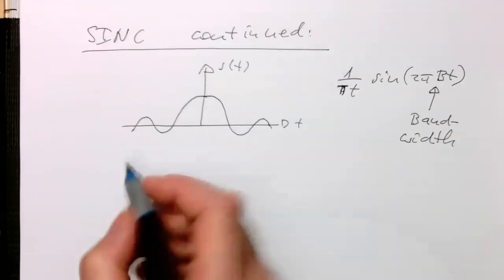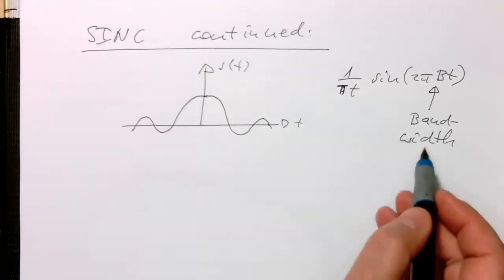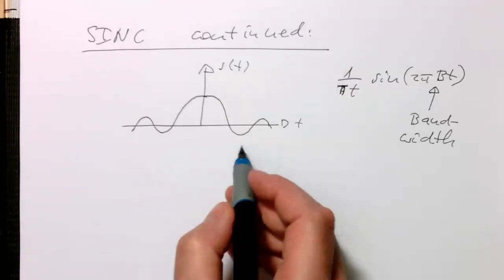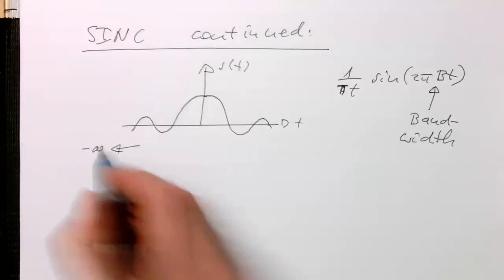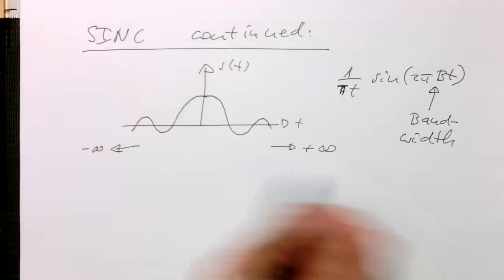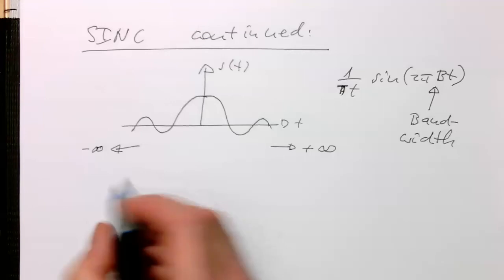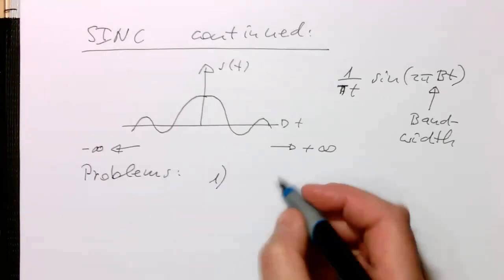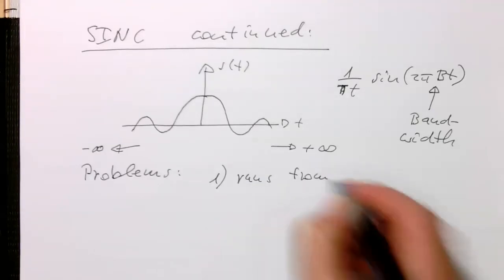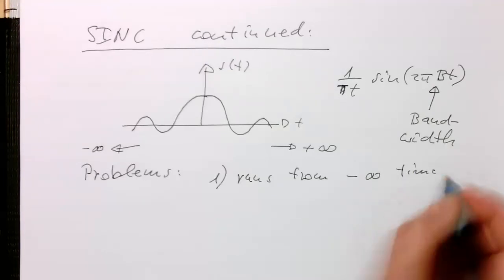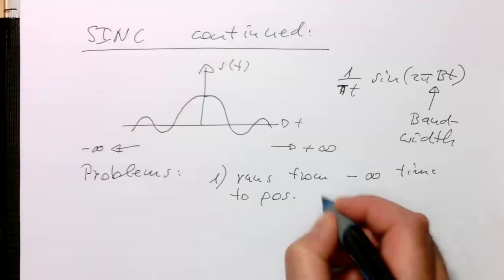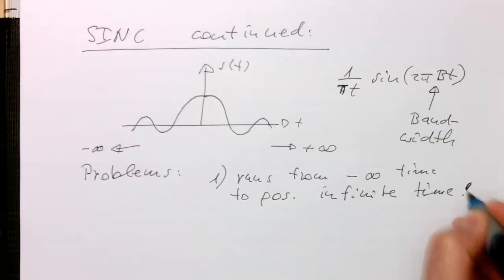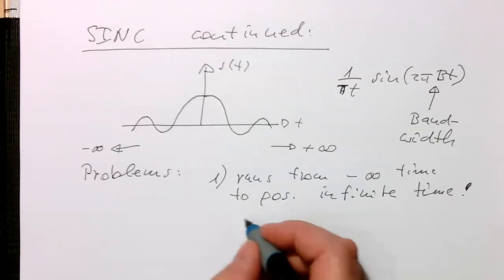So now with that, we are having two problems here, where I'm created by this. Now the bandwidth is nicely limited. But we have this function S of T, readers in both sides. So this means, it goes to negative infinite time. And it goes to positive infinite time. So this means, we need to, in order to create this function, the first problem, that's right here, problem. So the first problem is, that it runs from negative infinite time to positive infinite time. And this is obviously cannot be realized in a proper, in a real system.